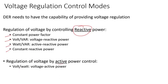Constant power factor and volt-watt are the typical modes that are used. That doesn't mean the other ones cannot be used, but these two are typical. I'll talk about each of these in detail later.